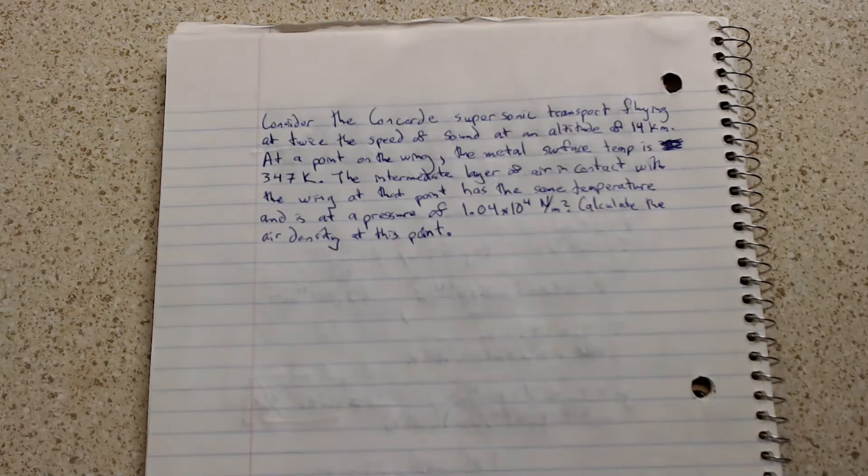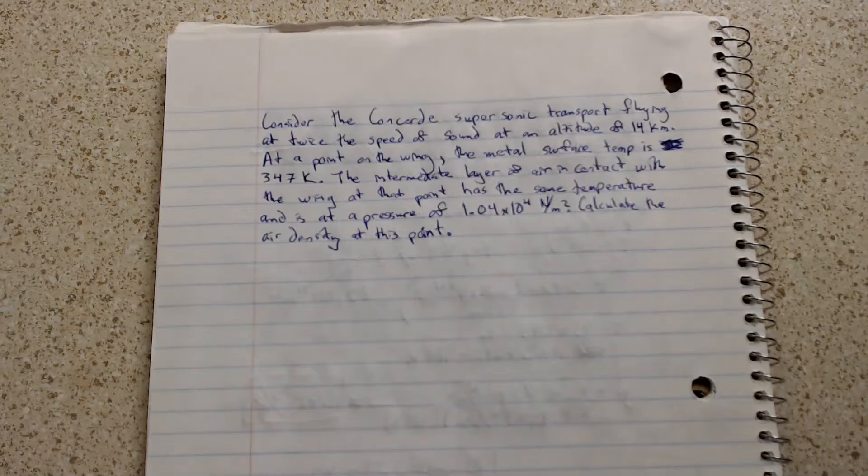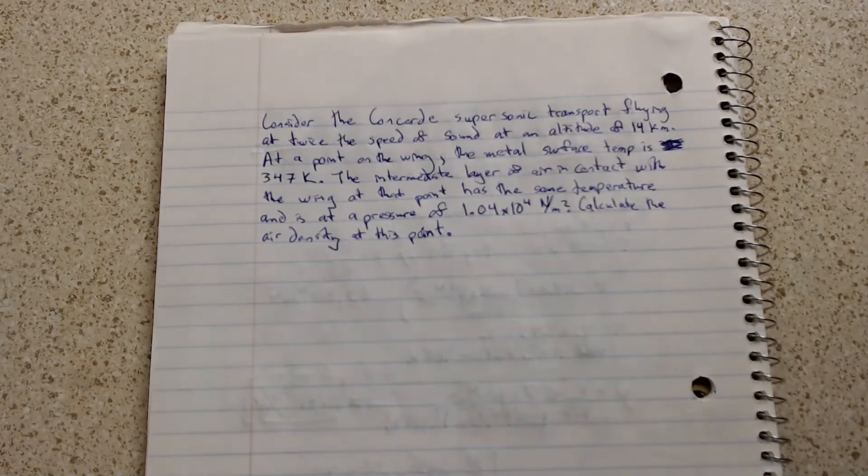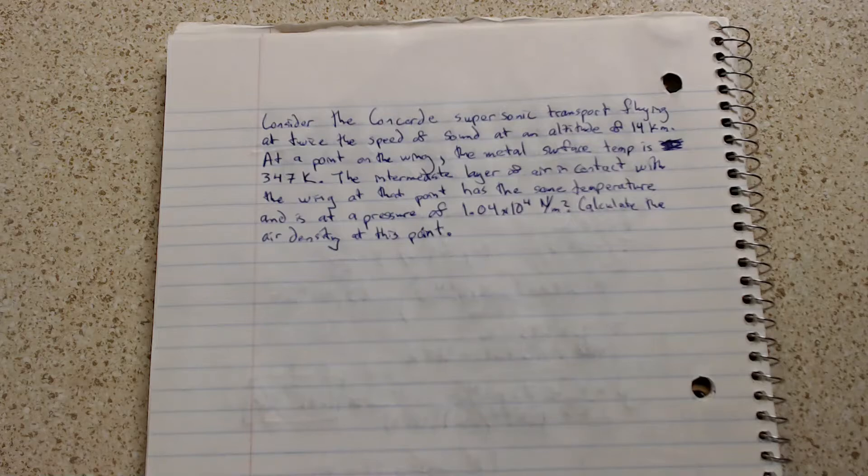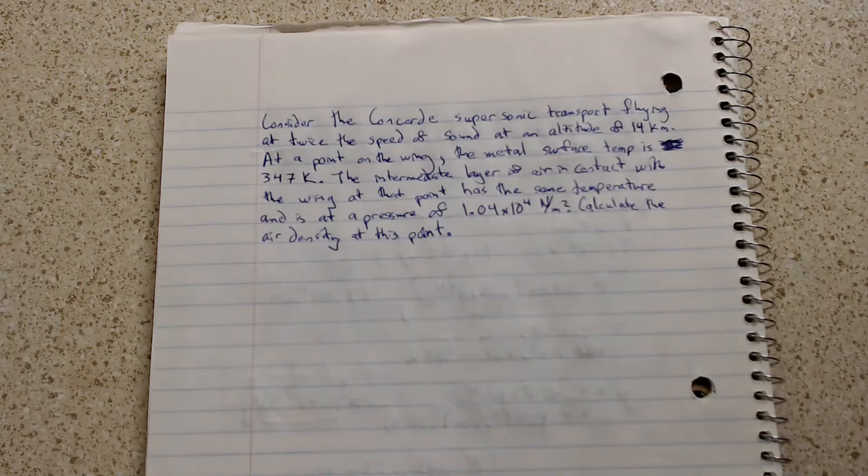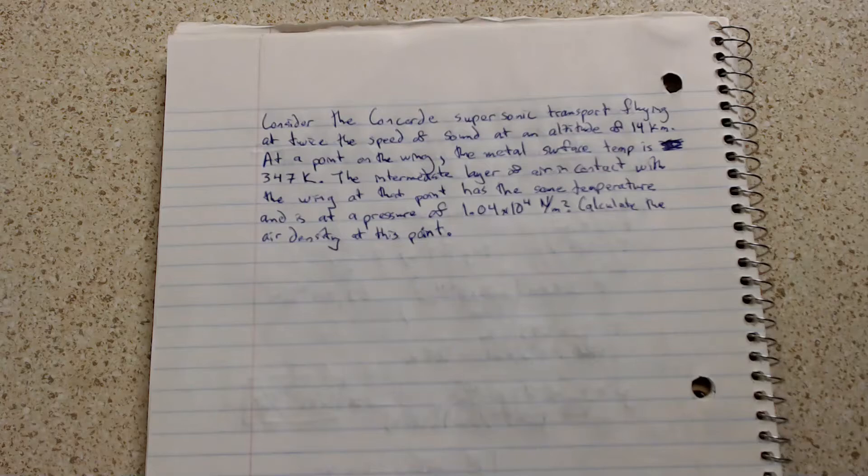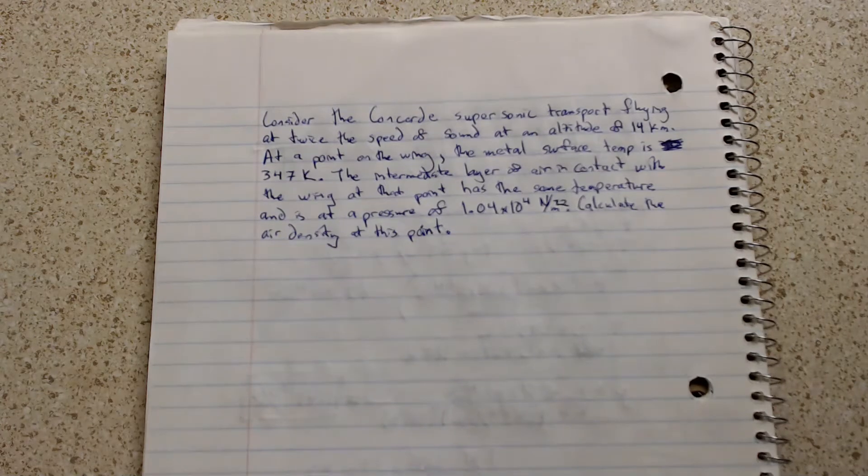At a point on the wing, the metal surface temperature is 347 Kelvin. The intermediate layer of air in contact with the wing at that point has the same temperature and is at a pressure of 1.04 times 10 to the fourth newton meters squared. Calculate the air density at this point.